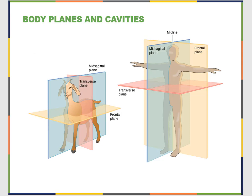You can see the mid-sagittal plane in both organisms — it cuts them exactly in half left to right. The transverse plane cuts them top and bottom. For the goat, you can think of it as the entrance to the digestive system and the exit to the digestive system — the entrance is on top and the exit is on the bottom. The frontal plane cuts the organism into front and back.